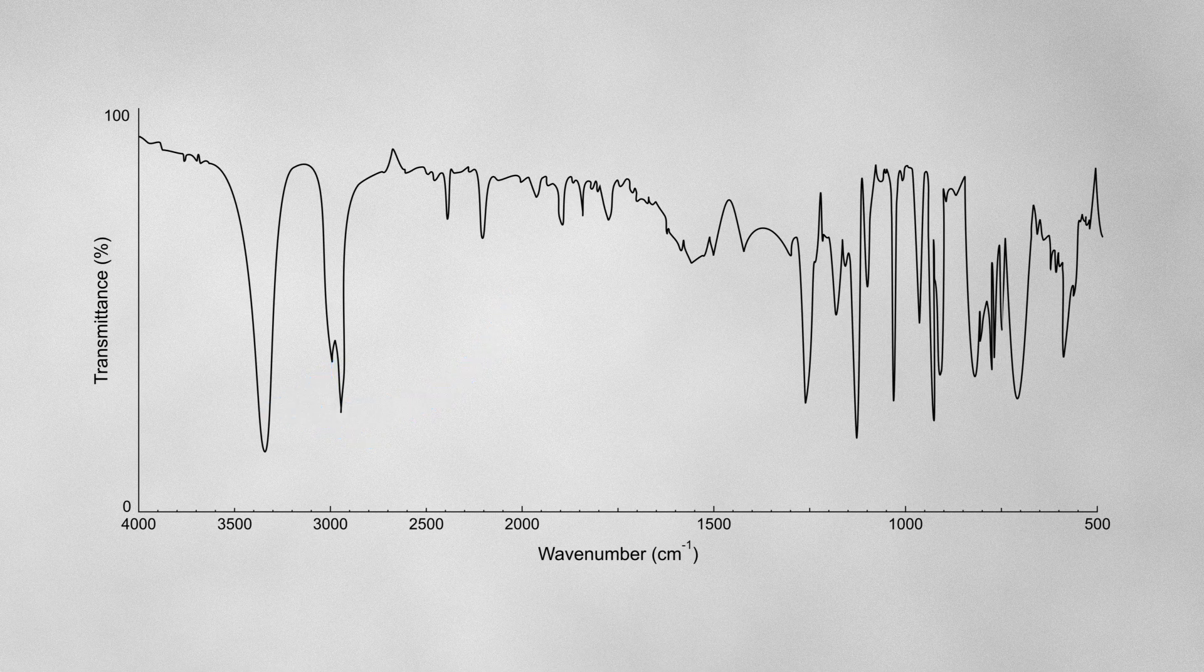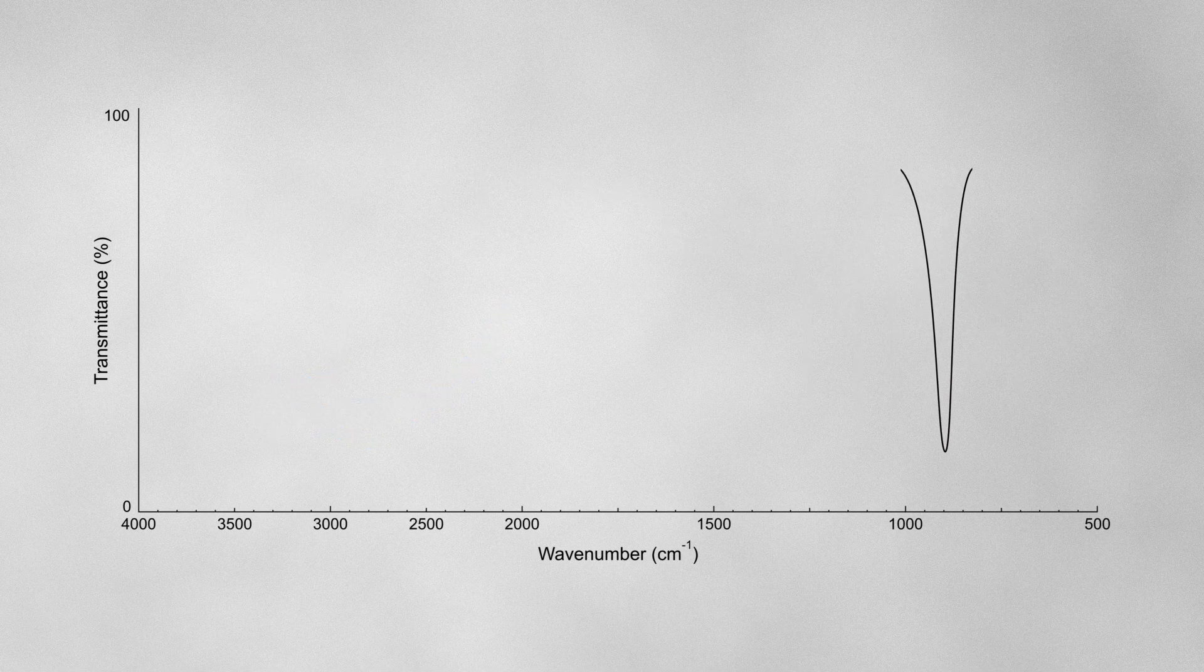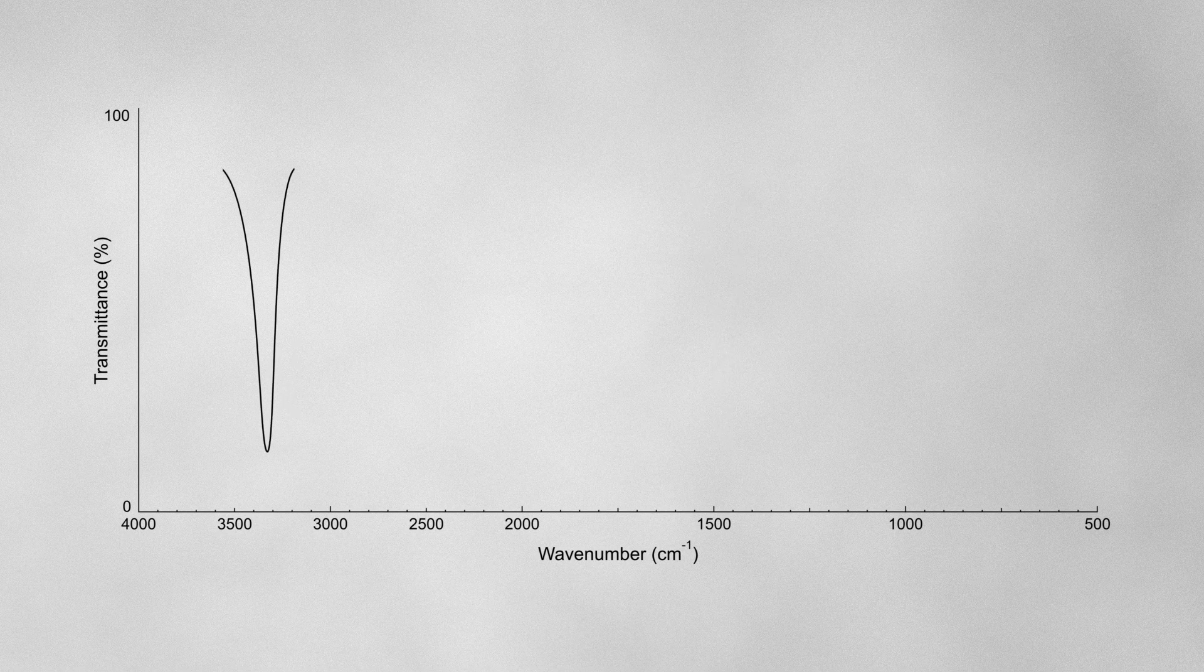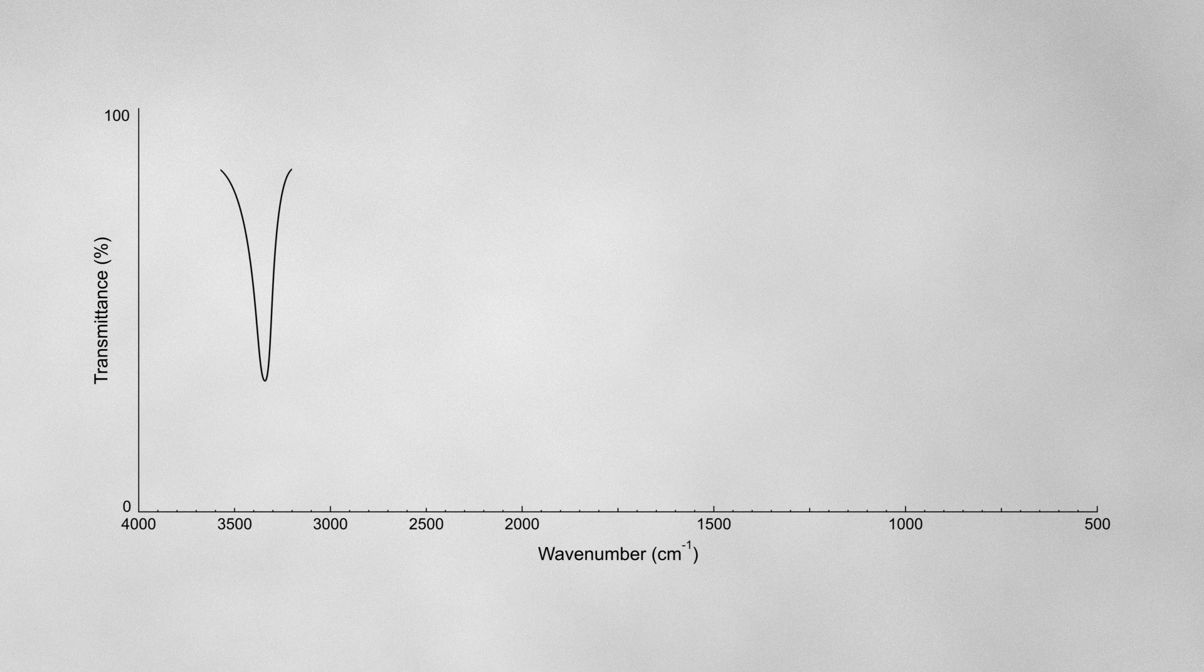So, when looking at IR spectra, the position of an absorption band depends on the atomic masses and the bond strength. The strength of the absorption depends on the extent of the change in dipole moment, and the width of the band depends on the amount of hydrogen bonding.